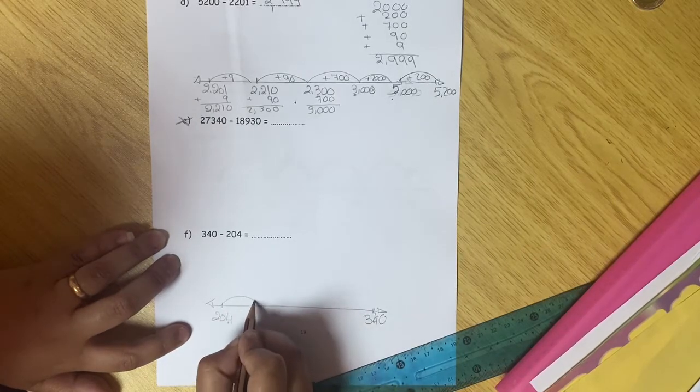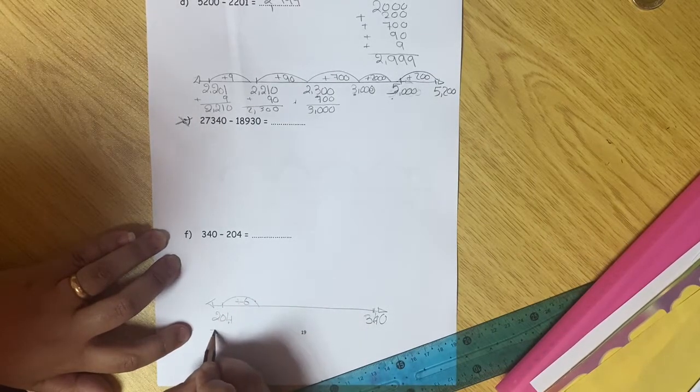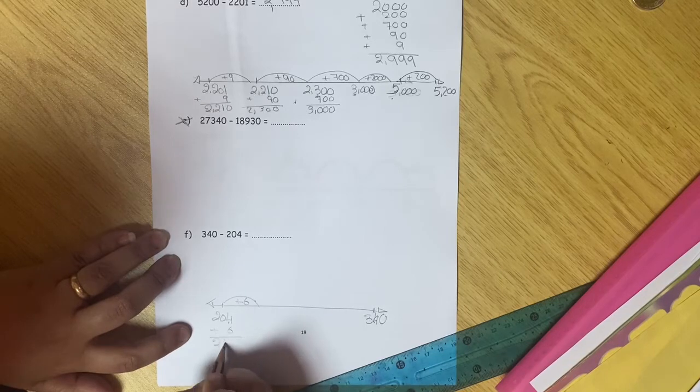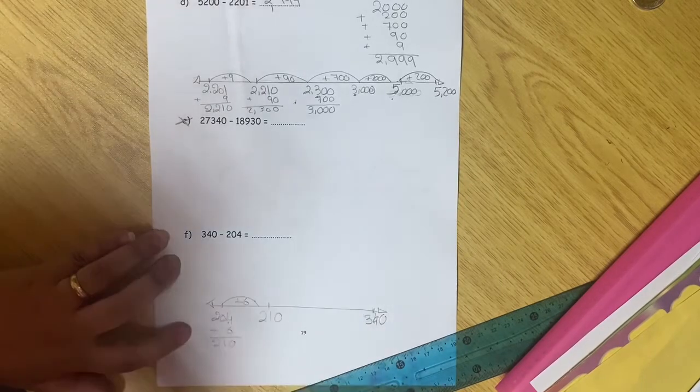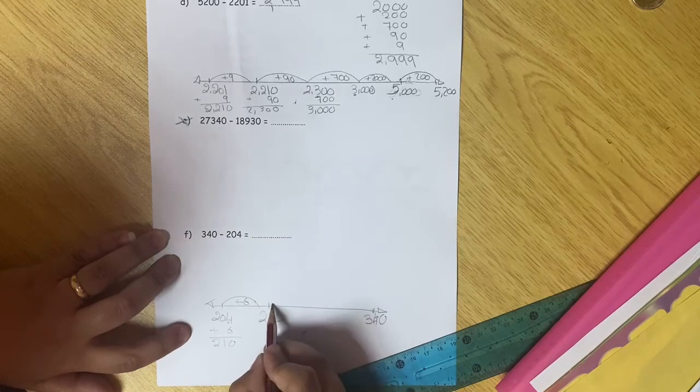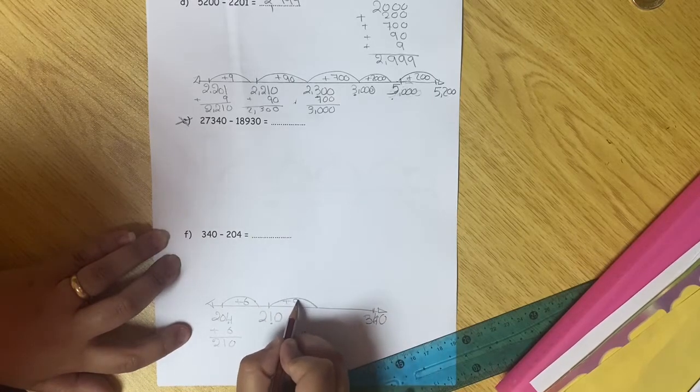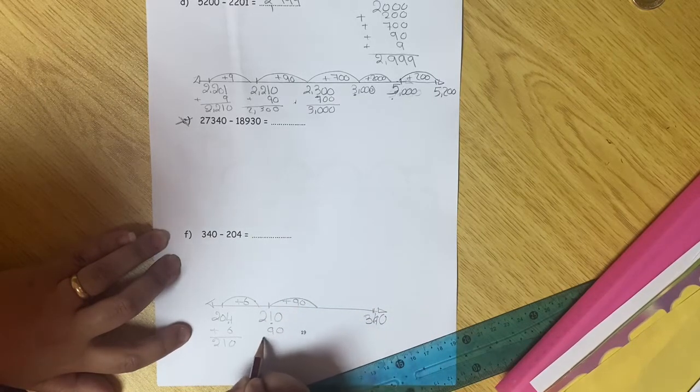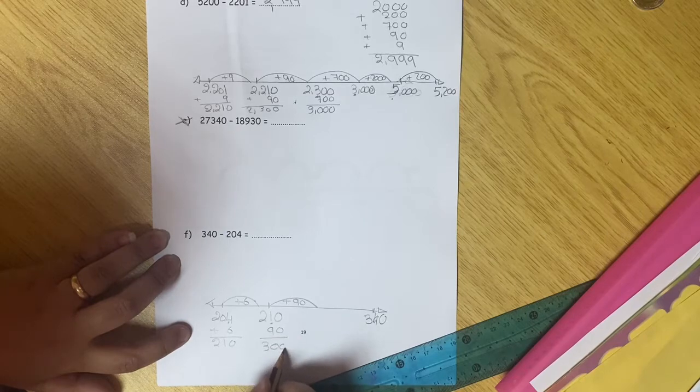The friend of the 4 to make perfect 10 is 6, so plus 6. It will be 210. I will write it here. Then, I have 1. The friend of the 1 to be perfect 10 will be plus 90. It will be 300. I will write it here.